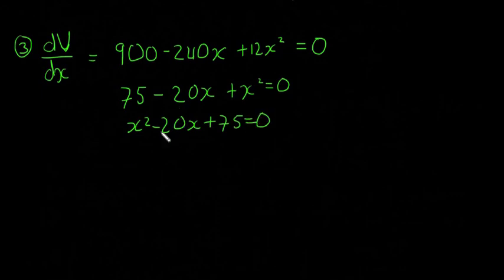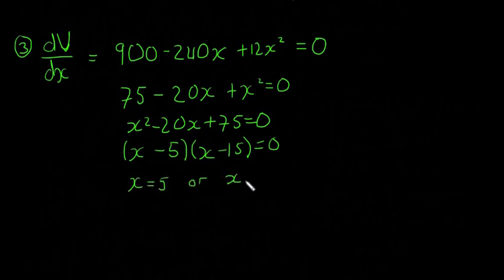Okay, so we're going to solve this for X. So we'll find our two values that give us a turning point or a maximum or the minimum. So it's going to be (X minus 5)(X minus 15) equal to zero. And that means X is going to be equal to 5 or X is going to be equal to 15. Okay, so these are our two values that give us our turning points. Now, this is the question where we're going to have to look at the second derivative because we have two values here.